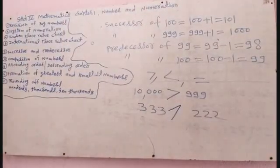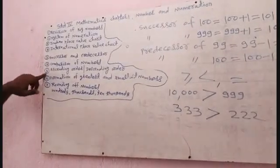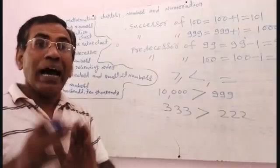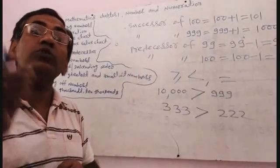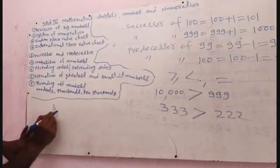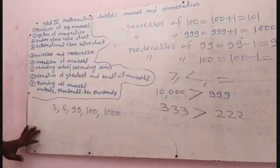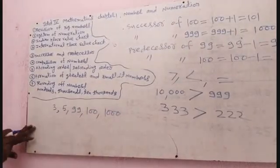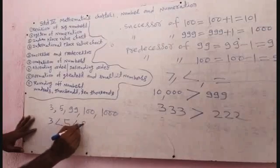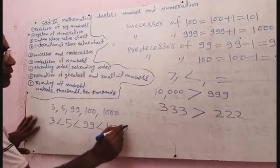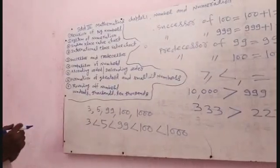Now I am going to teach you topic number five: Ascending Order and Descending Order. Ascending order means smaller to greater. Descending order means greater to smaller. For example: 3, 5, 99, 100, 1000. Arranged in ascending order: 3, then 5, then 99, then 100, then 1000. This is ascending order.